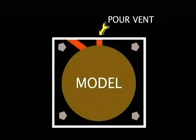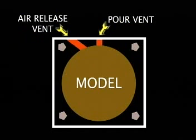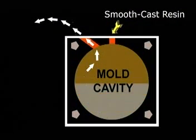The next step is to create a pouring vent that will allow us to pour a casting material into the finished mold and an air vent that will allow air contained in the mold cavity to escape during casting.